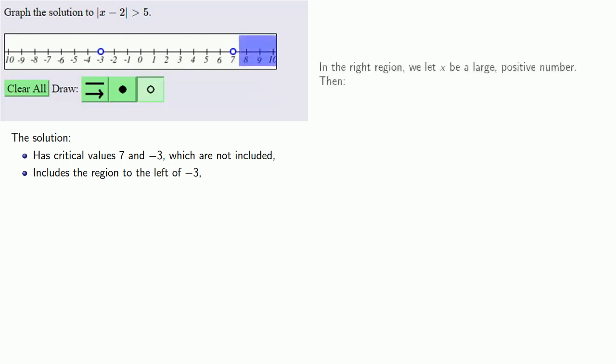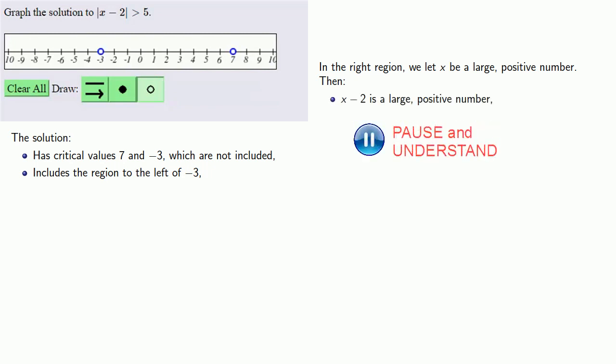In the right region, we'll let x be a large positive number. Then x - 2 is a large positive number.